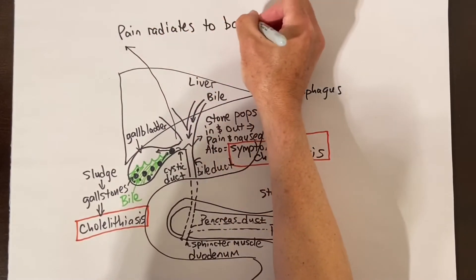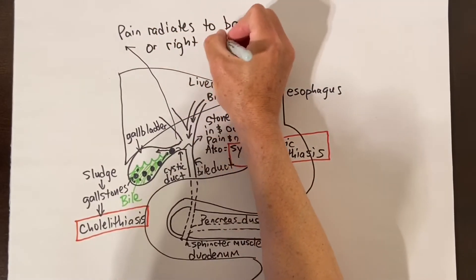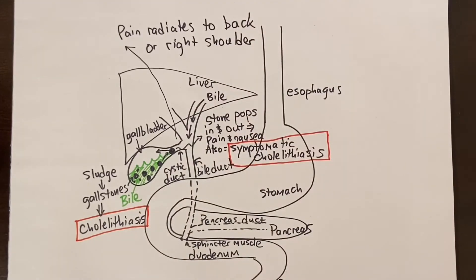Once you start having symptoms, the problems tend to persist and don't go away on their own. So we usually recommend removing the gallbladder. Because the stone can pop out of the cystic duct opening after a while, the symptoms may go away then recur at some point in the future.